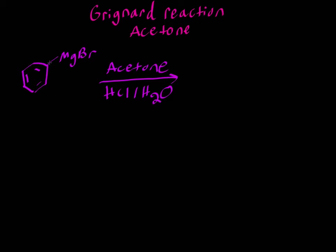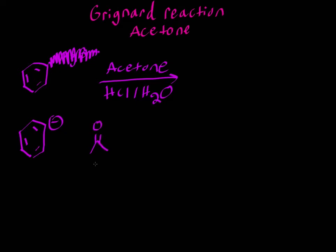First, we are going to remove this MgBr and write our reagent with a negative charge — that's a shortcut that's really helpful, saves a lot of steps, and makes the mechanism look a lot cleaner. Acetone is our electrophile, and this benzene ring with the negative charge on the carbon is our nucleophile.